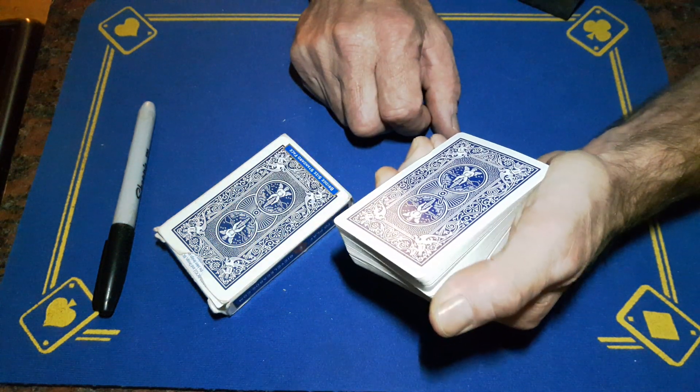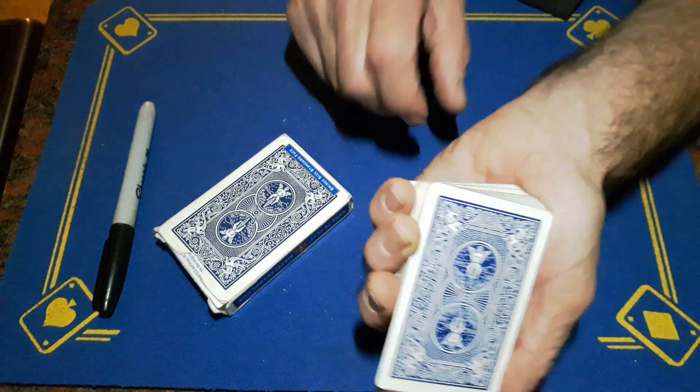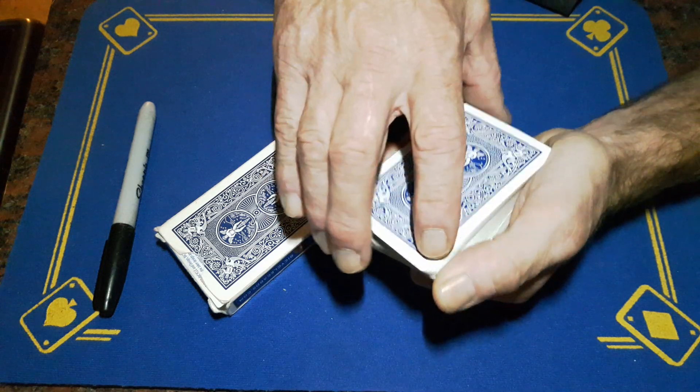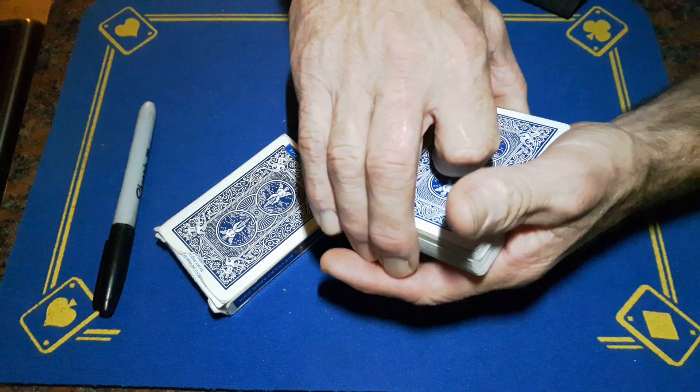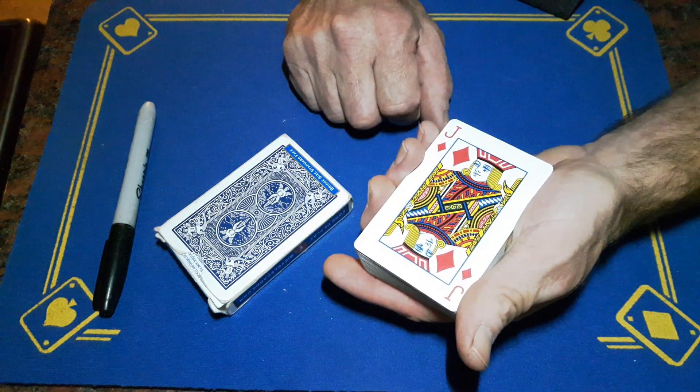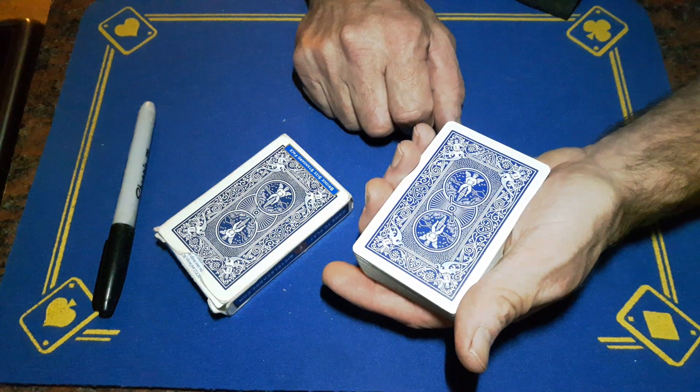And then I'm going to riffle down the side of the deck and you're going to call out stop anytime you like and we'll find you a card. Basically you're just going to pull up at your break and force the top card. Stop right here, are you sure? So in this case we have chosen the jack of diamonds. Now I lifted the jack up like this because I'm going to do that same move again in a minute.